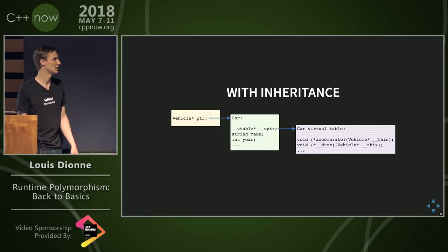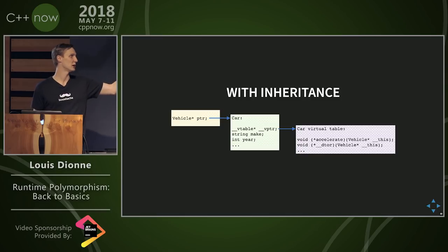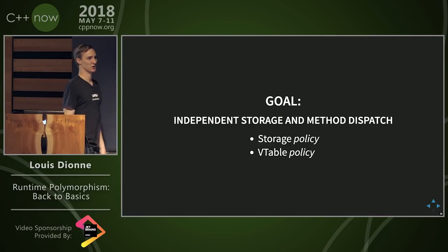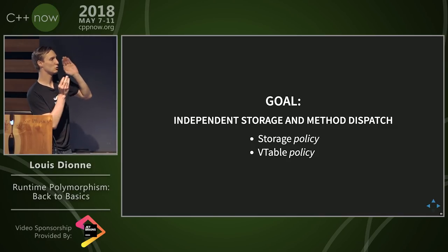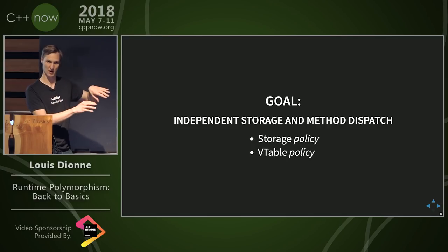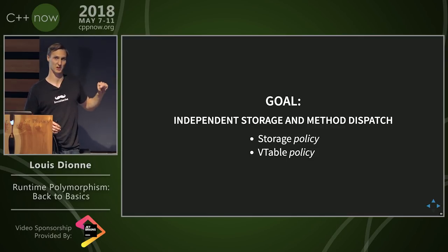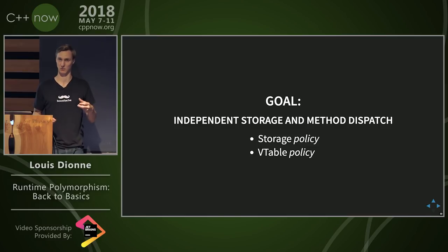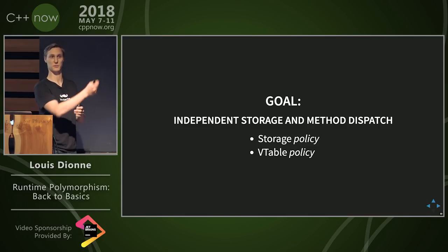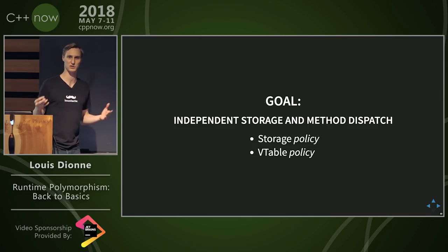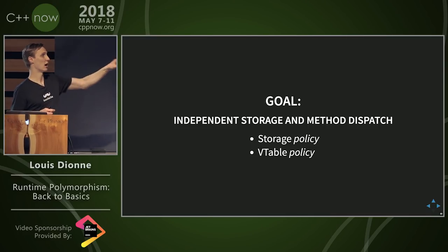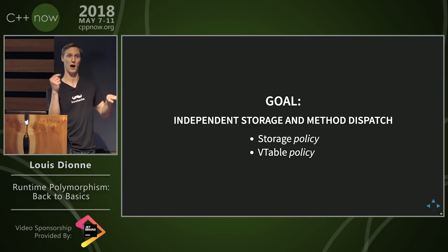Like I said, with inheritance we have a vtable pointer — a pointer to a vtable — and then the vtable contains the function pointers. The way I'm going to explore this design space for how to implement this magic vehicle type is by looking at two different aspects: two different policies. The first is a storage policy — how we store the actual object within that magic vehicle. The second is the dispatching component — what happens when you call a virtual method on one of these magic vehicles.